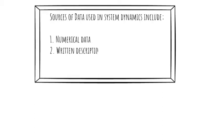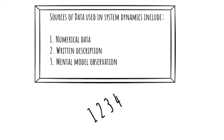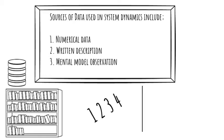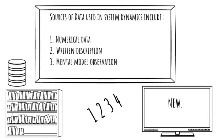System Dynamics, unlike a number of modeling approaches, draws upon a much bigger, broader set of information sources, not only the numerical data which is often the only input into modeling, but also the information one finds in written databases in libraries, in the press about the nature of business and social systems.